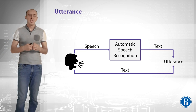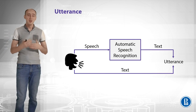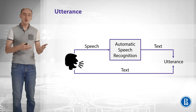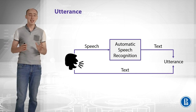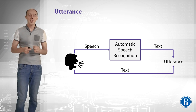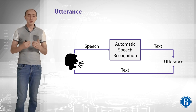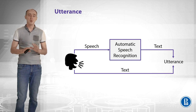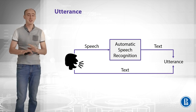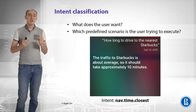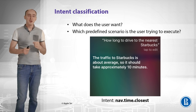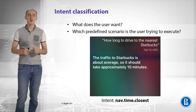What we actually get from the user when they use our system is either speech or text. If it is speech, we can run it through automatic speech recognition and get the text as the result. What we actually get is the utterance, and we will further assume that our utterance is text — we don't deal with speech, because it is out of scope of this week. The first thing you need to do when you get the utterance from the user is understand what the user wants, and this is the intent classification problem.